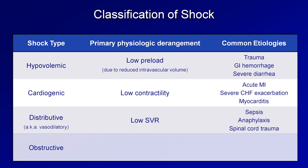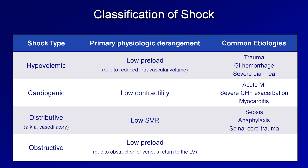Finally, there is obstructive shock. This occurs when there is low preload in the left ventricle as a consequence of a physical or mechanical obstruction to venous return. Examples include massive pulmonary embolism; pericardial tamponade, in which fluid fills the pericardial sac and prohibits diastolic filling of the ventricles; and tension pneumothorax, in which a large amount of air becomes trapped in the pleural space of one lung, physically crowding out other intrathoracic structures.